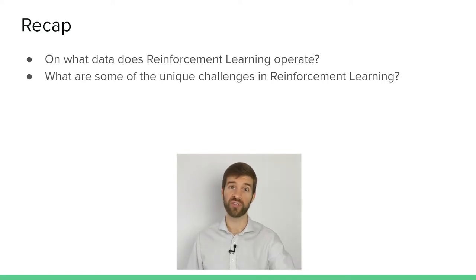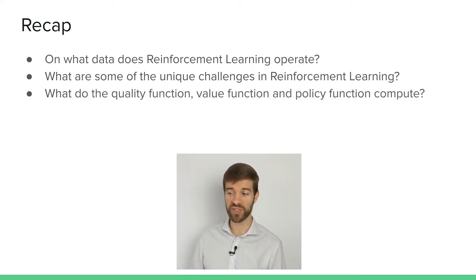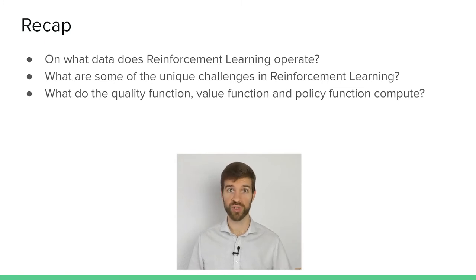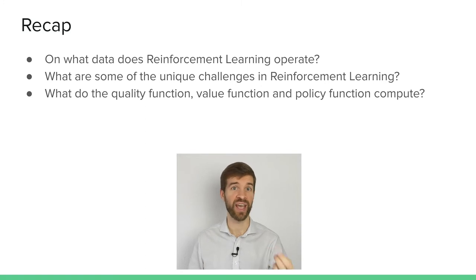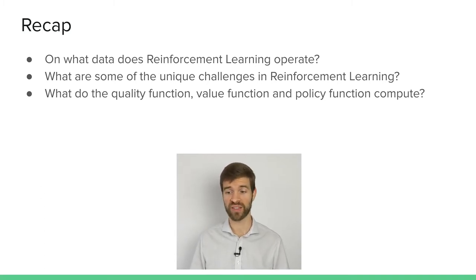Delayed consequences are particularly challenging for reinforcement learning, as we might only know whether an action was good or not long after we took it. The quality function computes the expected total reward when we're in state s and take action a — how good is that action going to be in the current state into the future.